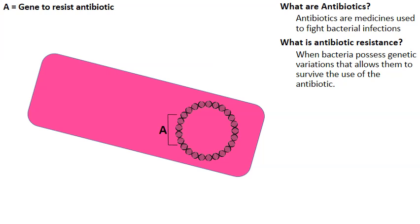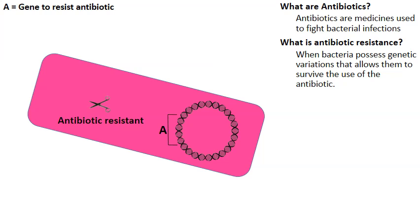Another way some bacteria can survive in the presence of an antibiotic — again, let's say it has gene A — is that gene might allow the bacteria to produce enzymes. Animated here as a pair of scissors, when the bacteria absorbs the antibiotic, the enzymes break down the antibiotic, thus allowing the bacteria to survive. This bacteria is antibiotic resistant.